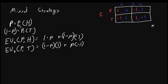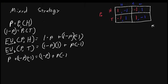For player two to be willing to randomize, his expected utility from playing heads and playing tails, given player one's strategy, must be the same. Mathematically, we can derive the condition such that player two would be willing to randomize by setting these equal. We get: p + (1−p)(−1) = (1−p) + p(−1). This is a simple equation, and we can solve it to see that for player two to be indifferent between playing heads and tails, p must equal 0.5.